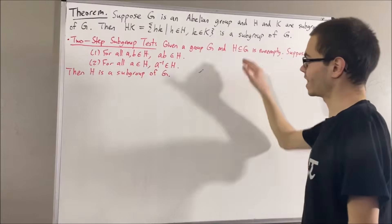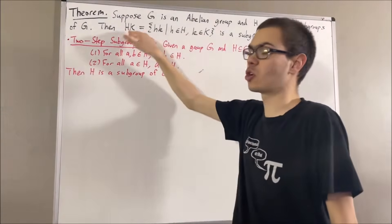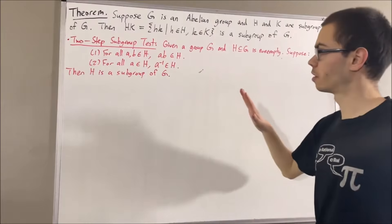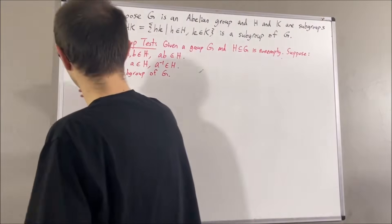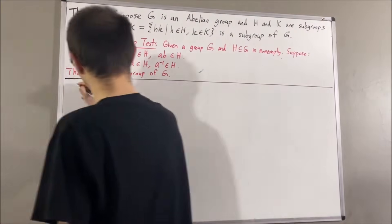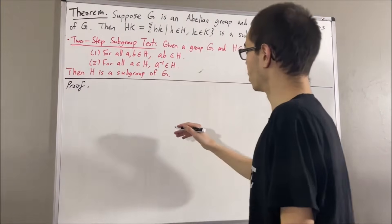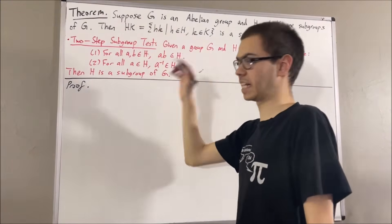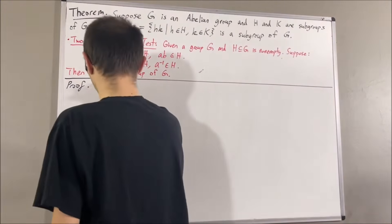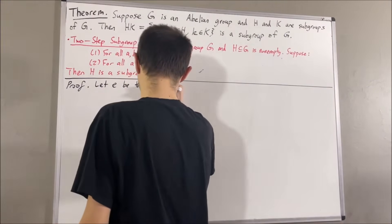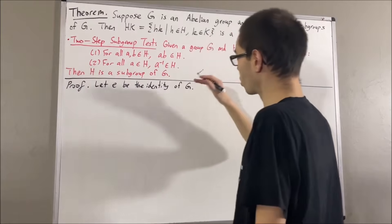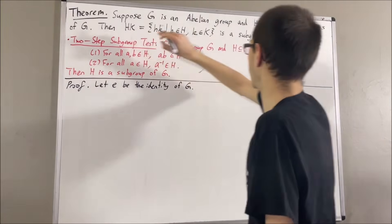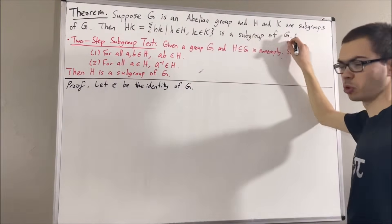So, replacing h with hk, we are going to show that hk is a subgroup of g. To start with the proof, let's suppose that the identity element of g is e. From here, we are going to use the two-step subgroup test to show that hk is a subgroup of g.